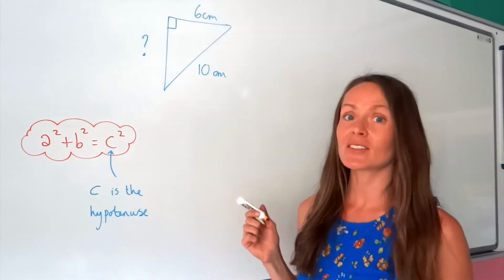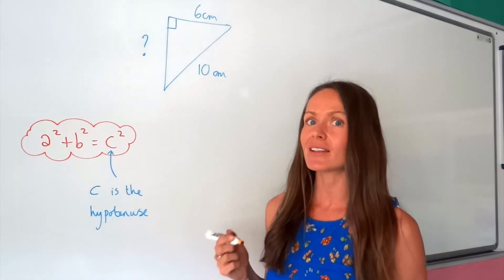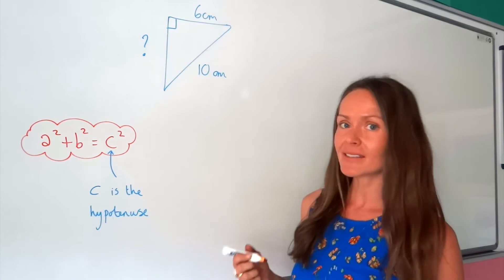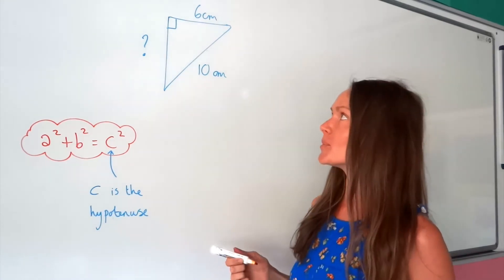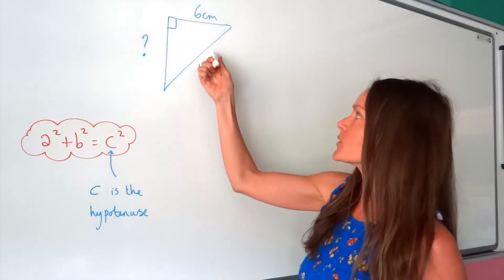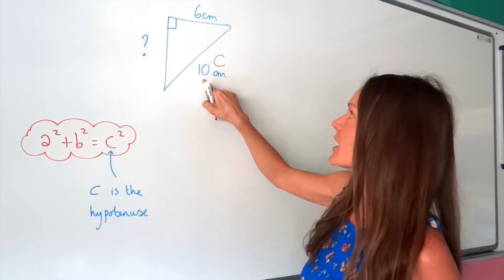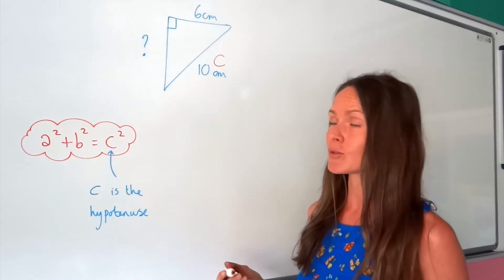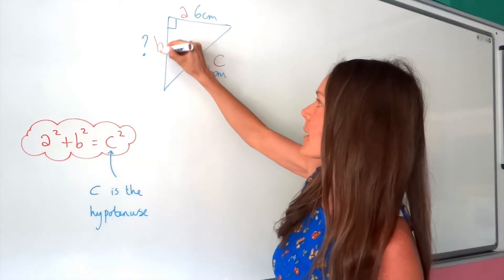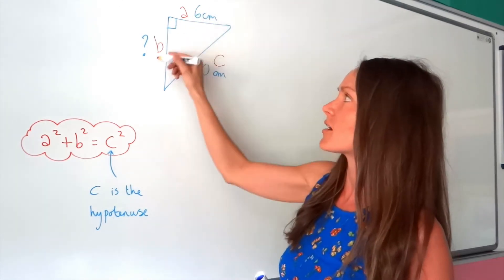So just like before, I need to start by labelling the three sides in this question. Remember, c is the hypotenuse, the one opposite the right-angle. So that must be this one here, which is 10. And A and B, it doesn't matter which way round, so I'm just going to label the top one as A and that one as B. So they're the shorter sides.